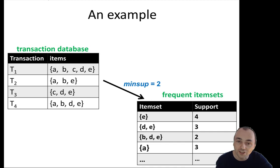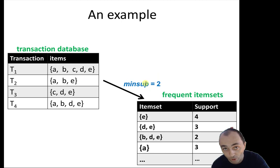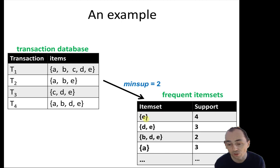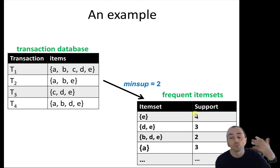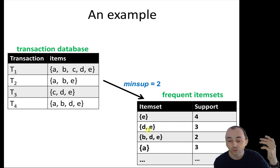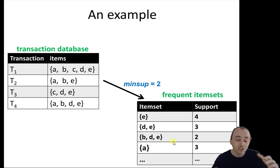Let me show you this with an example. I have the same transaction database as before, and I set the minimum support to two, meaning I want to find what people buy together at least twice. On the right I have part of the result — the frequent itemsets. For example, E is a frequent itemset because it appears four times, so its support is four. Date and eggs (D, E) appear three times, which is at least two, so D,E is also a frequent itemset.